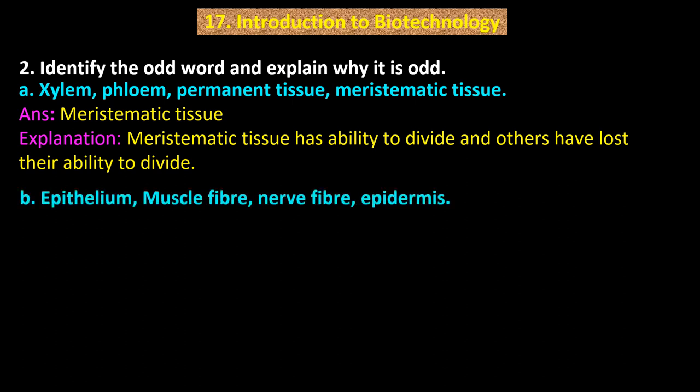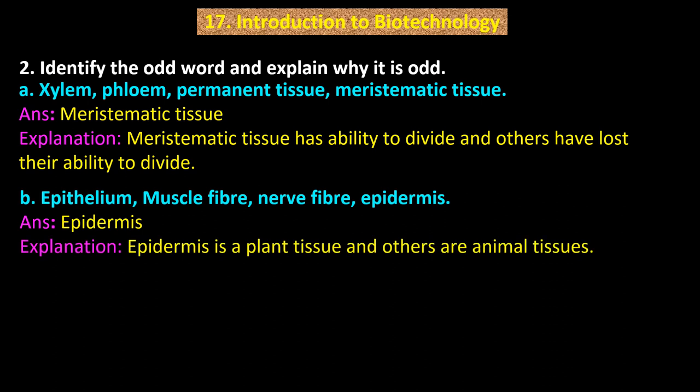Point B: Epithelium, muscle fiber, nerve fiber, epidermis. Answer: Epidermis. Explanation: Epidermis is a plant tissue and others are animal tissues.